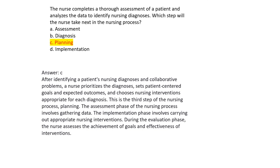Answer C: Planning. After identifying a patient's nursing diagnoses and collaborative problems, the nurse prioritizes the diagnoses, sets patient-centered goals and expected outcomes, and chooses nursing interventions appropriate for each diagnosis. This is the third step of the nursing process. The assessment phase involves gathering data. The implementation phase involves carrying out nursing interventions. During evaluation, the nurse assesses the achievement of goals and effectiveness of interventions.